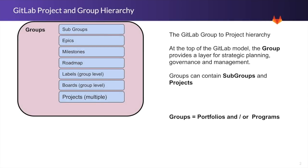When we take a look at the structure of GitLab, we have groups and projects. Groups will be at the highest level — you have one parent or umbrella group, with subgroups that can fall underneath, and even subgroups under those. At this top group level, we have access to epics, milestones (a time box in GitLab terminology for sprints or releases), a roadmap showing all epics and their timelines, and the ability to create labels, boards, and projects under those groups or subgroups.